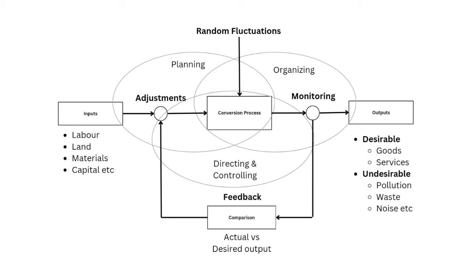Inputs to the conversion process is where we need to plan our things properly - how much resources, how much labor, what quality of things we will be using in what amount so that we can control our outputs. This whole conversion process, adjusting, monitoring and adjusting is what comes under the direction and control part. Conversion process becoming outputs is where we'll have to organize things properly so that we can categorize desirable and undesirable outputs.